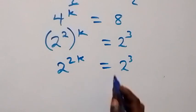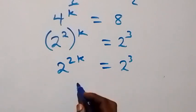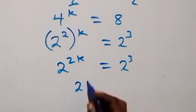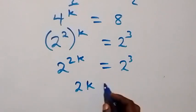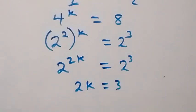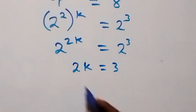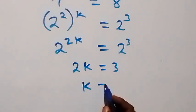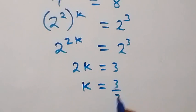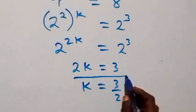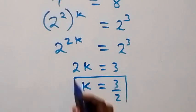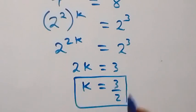Since the bases are equal, we equate the powers. So we have 2k equals 3. Dividing both sides by 2, we have k equals 3 over 2. So we have the value of k from this given problem.